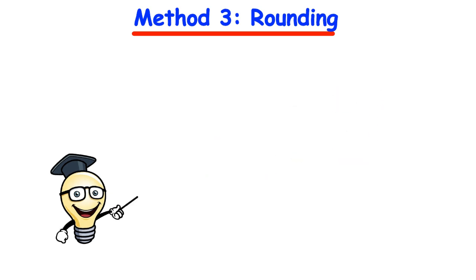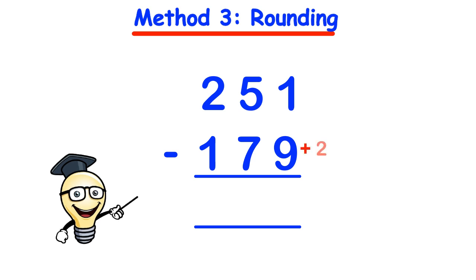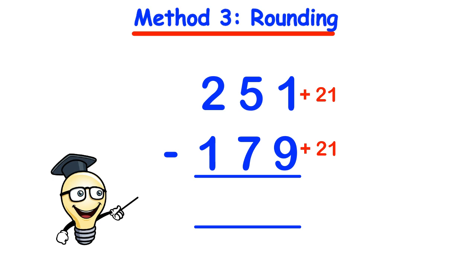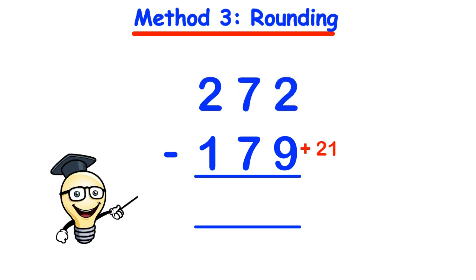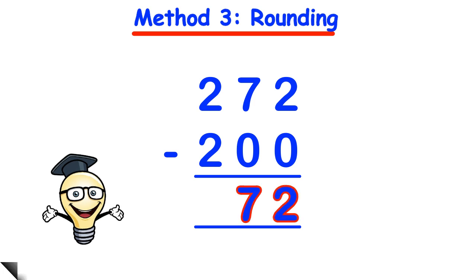Let's try this on triple-digit sums. Taking the example 251 take away 179: since there are 3 digits at the bottom, we round to the nearest 100. We see that 179 is 21 away from 200, so we add 21 to both numbers. 251 plus 21 gives us 272, and 179 plus 21 gives us 200. So the new sum becomes 272 take away 200, which gives us 72.